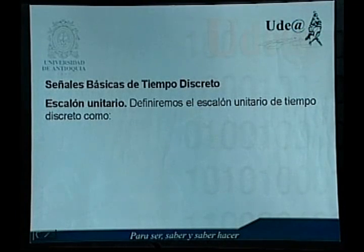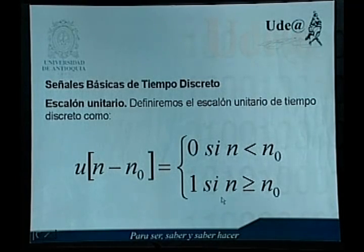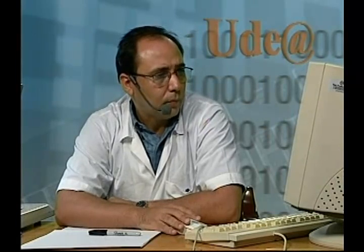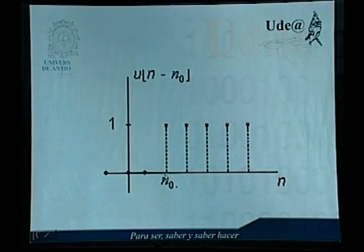Definiremos el escalón unitario de tiempo discreto como la función u de n menos n sub 0, que va a ser igual a 0 si n es menor que n sub 0, y a 1 si n es mayor o igual que n sub 0. Es decir, antes de n sub 0 la función va a ser igual a 0 y después de n sub 0, incluyendo el valor n sub 0, la función va a tomar el valor de 1. El gráfico de esta función se detalla a continuación: vemos que antes de n sub 0 la función vale 0 y de n sub 0 en adelante la función vale 1.